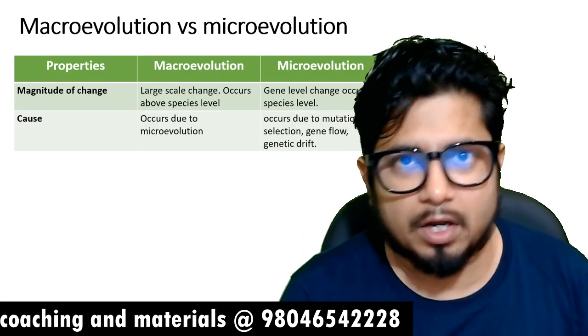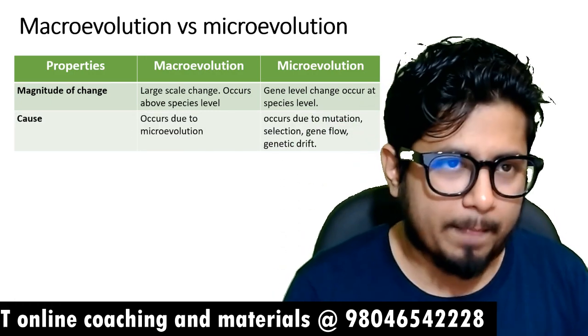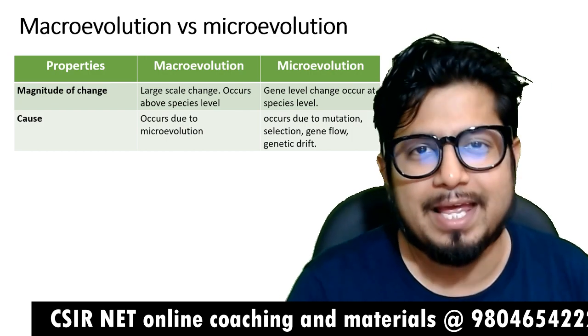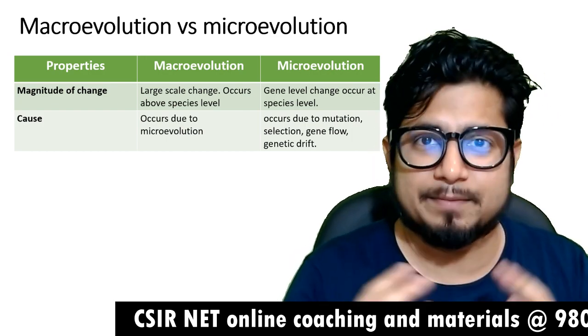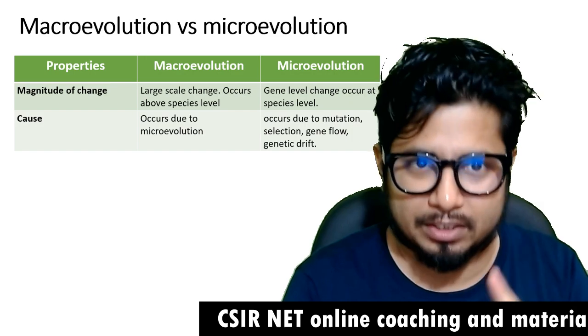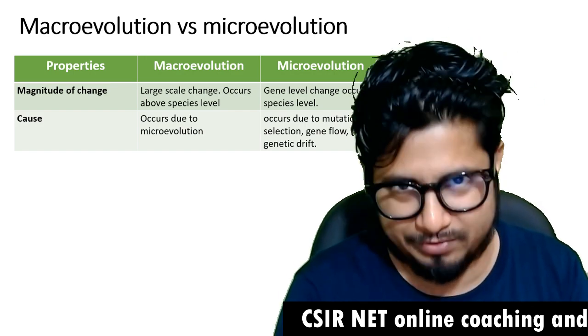The cause of micro and macroevolution: the cause of macroevolution is due to microevolution, and the cause of microevolution is mainly due to mutation, natural selection, gene flow, and genetic drift.